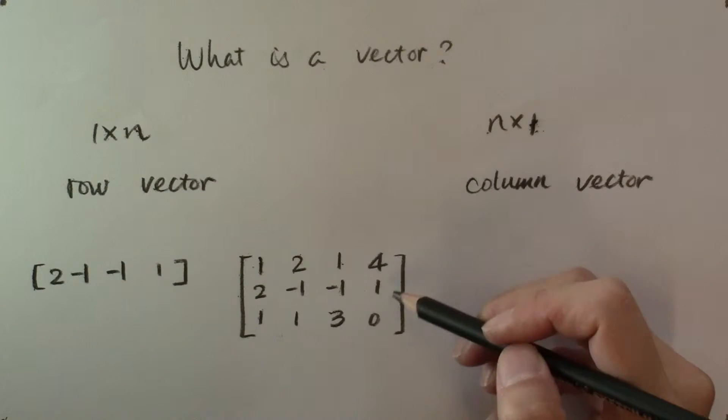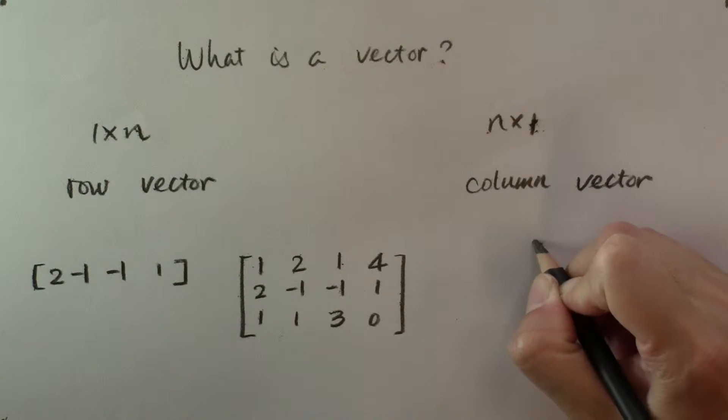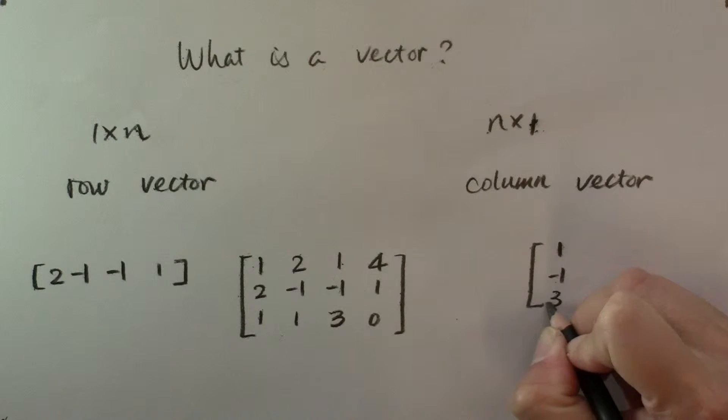And each column of a matrix forms a column vector. For example, the third column of this matrix is the vector 1, negative 1, 3.